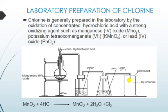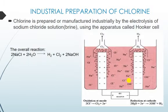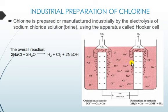Now we'll be looking at the industrial preparation of chlorine. Chlorine is manufactured industrially by the electrolysis of sodium chloride solution — brine — using an apparatus called the Hooker cell. This is a schematic representation of the Hooker cell, showing the brine solution, the anode, the cathode, and the direct current source. The positive end is connected to the anode and the negative end to the cathode.